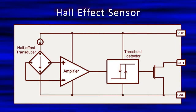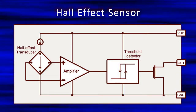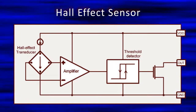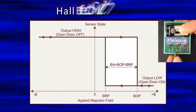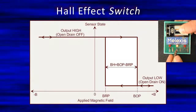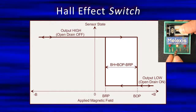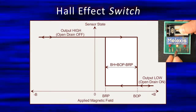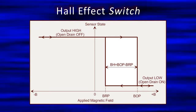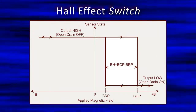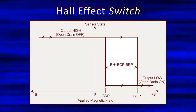The device structure described in the figure can provide two distinct and different behaviors, depending on the magnetic field thresholds at which the device switches on and off. The first case is when both the turn-on threshold, BOP, and the turn-off threshold, BRP, have the same polarity. Such a device is called a Hall Effect unipolar switch, or often just a Hall Effect switch.